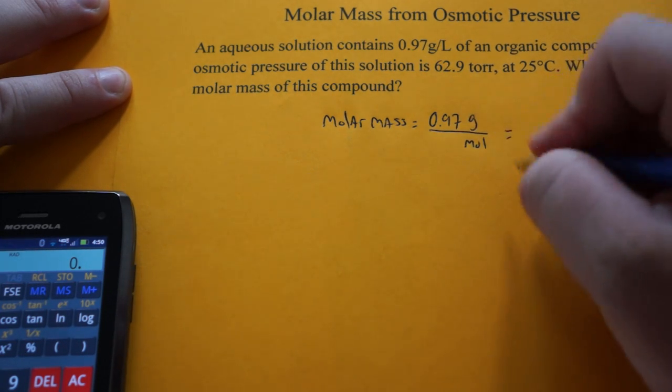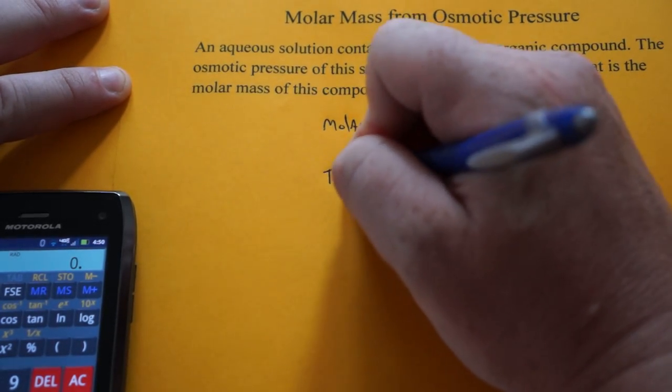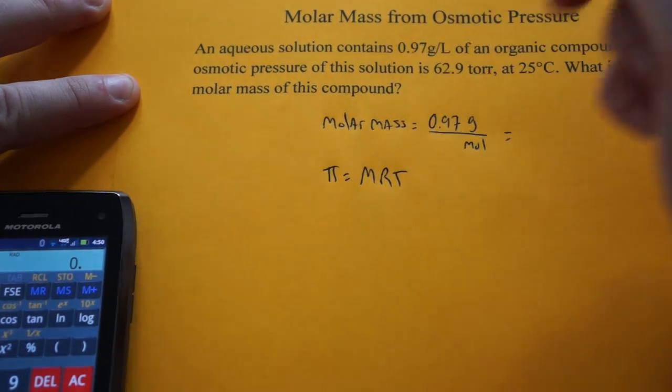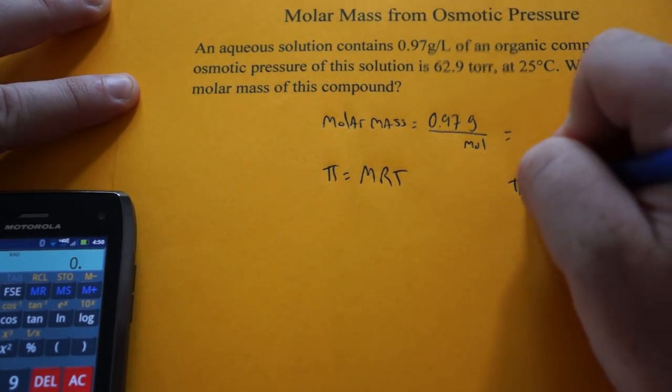The osmotic pressure, let's see that's going to be, well here's our osmotic pressure calculation. Pi equals MRT, Pi is osmotic pressure,